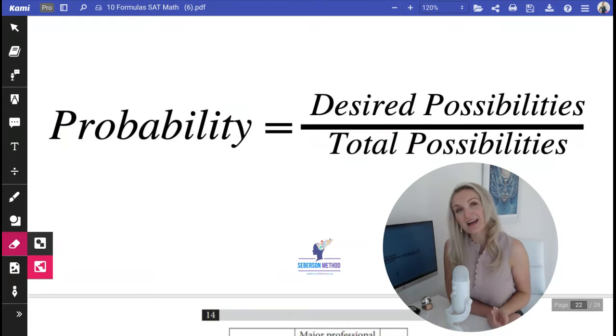Now, desired possibilities is something that we want, and total possibilities is the total number of outcomes.